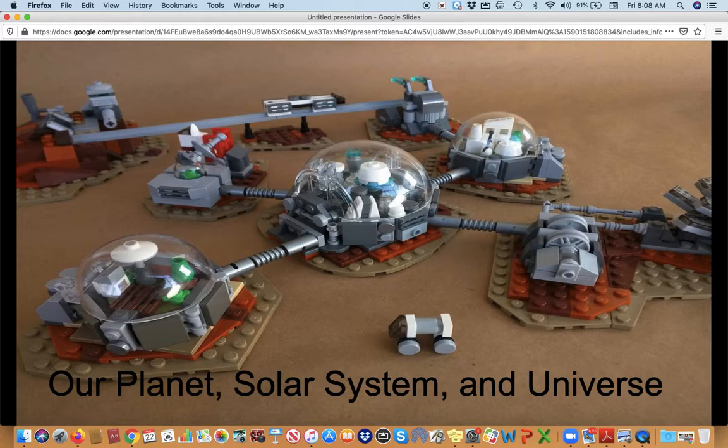Our planet, solar system, and universe. I found this cool Lego mock-up of a Mars colony which doesn't exist yet, but that's something that we talked about as being a future possibility. And then we talked about the size of our solar system, how long it takes currently to get to, for example, the moon or to Mars, how long it takes sunlight to get from the sun to our planet, and the overall size of the universe.